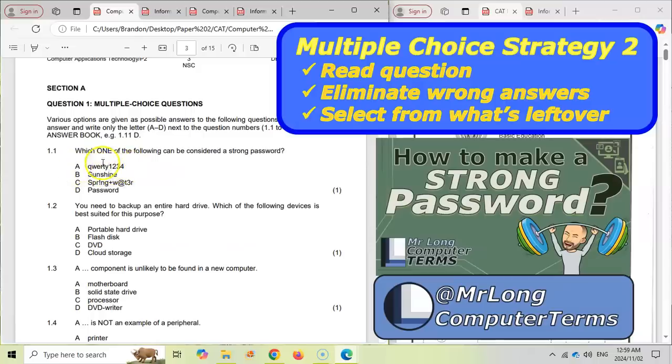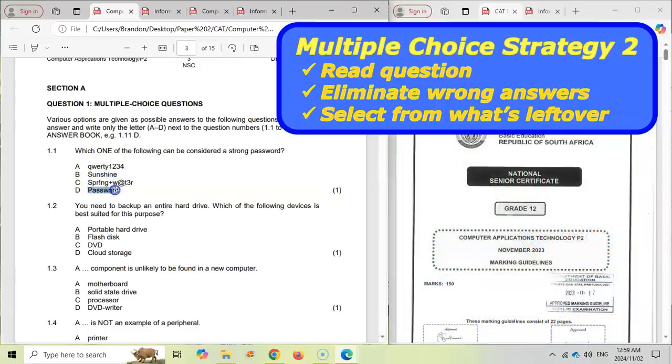So for example QWERTY123 that would definitely be wrong. I know it's got letters and numbers but there's no capitals and it's quite similar to your keyboard. It's quite a generic one. So we wouldn't use that one. We wouldn't use B because there's no numbers over there and password is a terrible password.